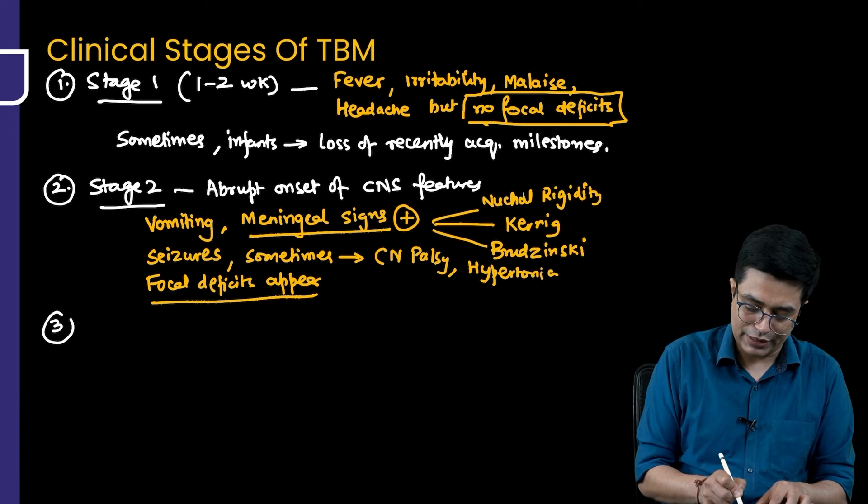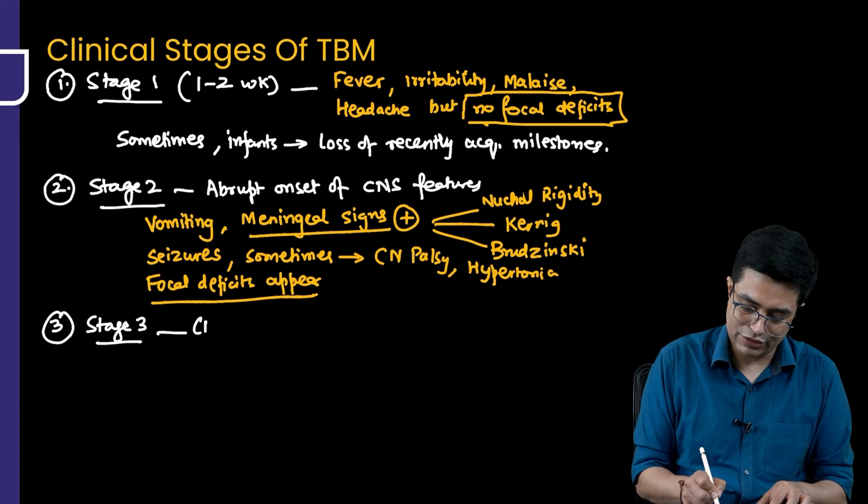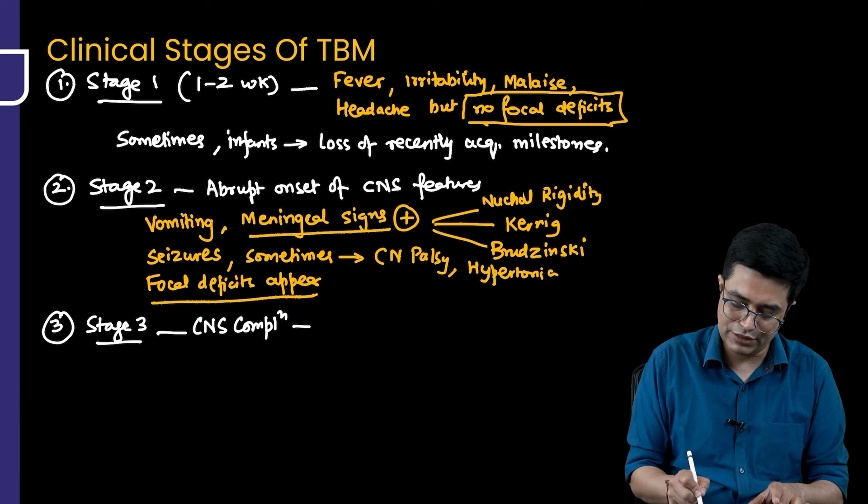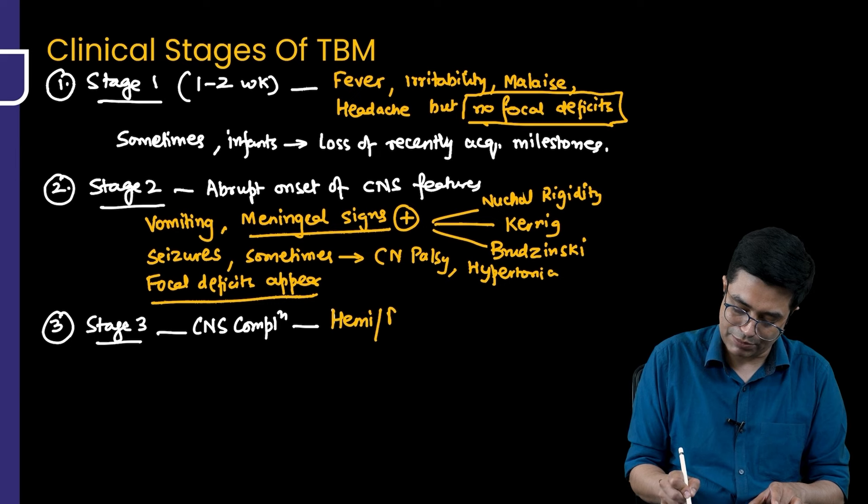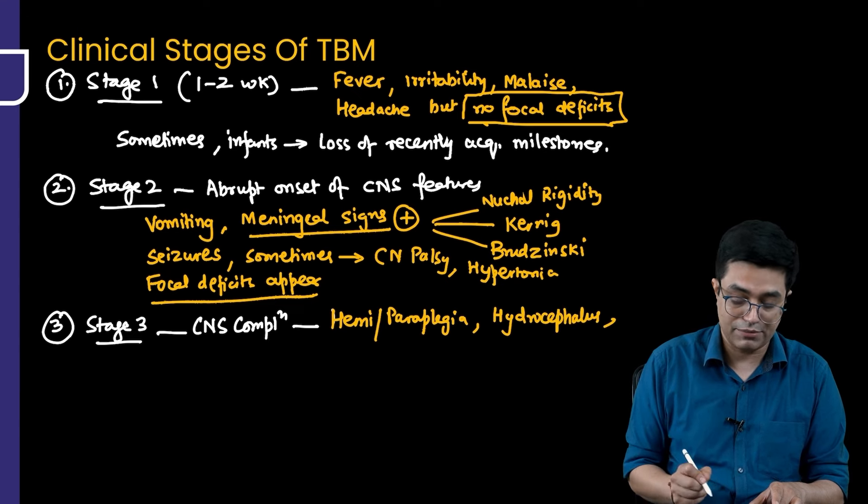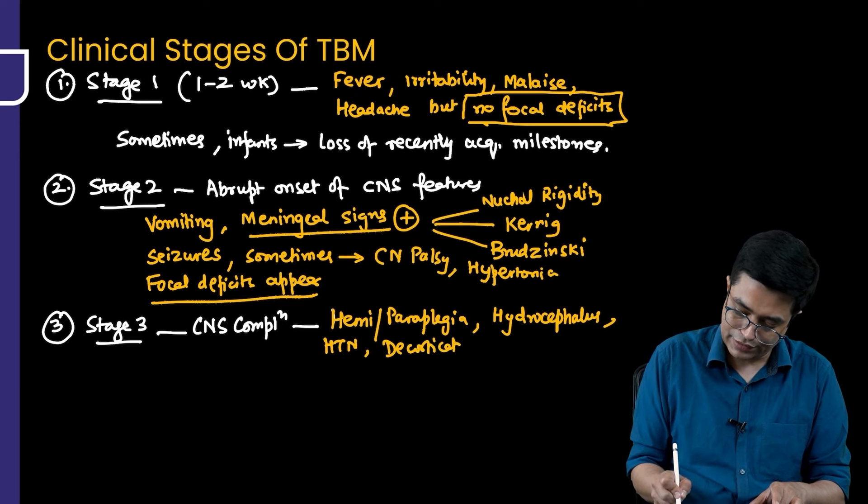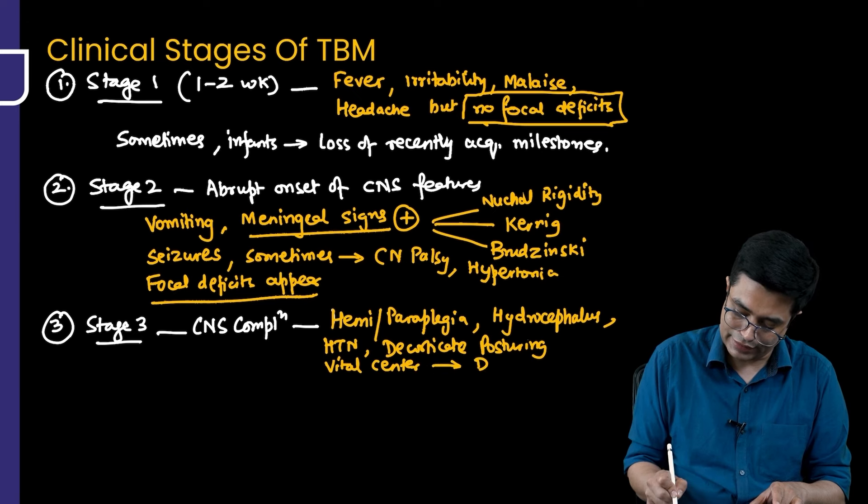And then we have the stage 3. Stage 3 is called as the CNS complication stage. This is the stage where there are CNS complications and the non-CNS like systemic complications will also happen. The patient will develop features like hemiplegia, there can be paraplegia, the patient can have development of hydrocephalus which can progress to raised intracranial pressure, there can be hypertension in the patient, there will be decorticate posturing due to involvement of vital centers. Vital center involvement can happen and that can lead to death in the patient.